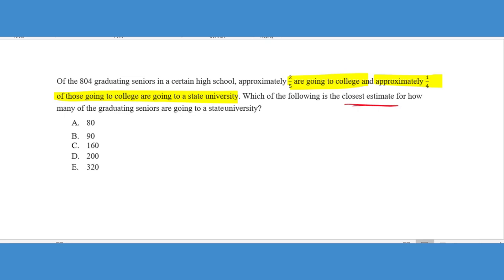It says, what's the closest estimate for how many of the graduating seniors are going to the state university? So before we can figure out how many seniors are going to a state university, we have to kind of take this in steps. We need to figure out how many of the seniors are actually going to college to begin with. So if I take 804 and multiply it times two fifths, you're going to get approximately 322 seniors are actually going to college.